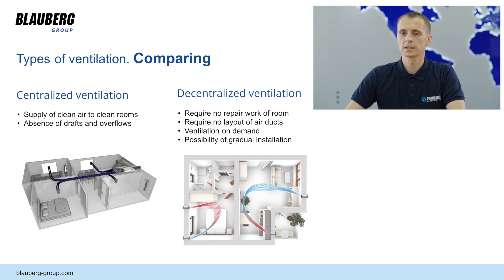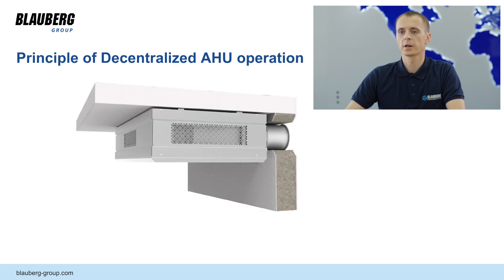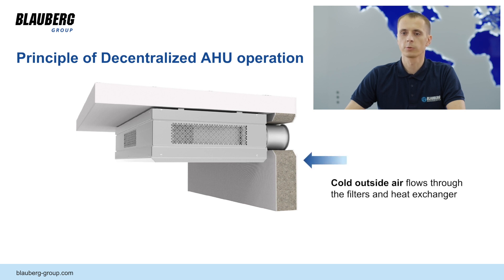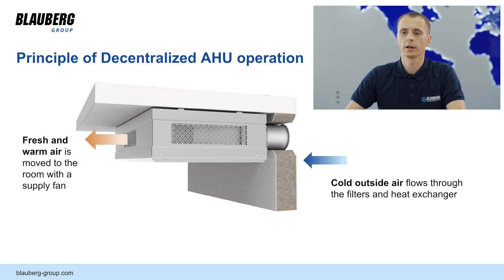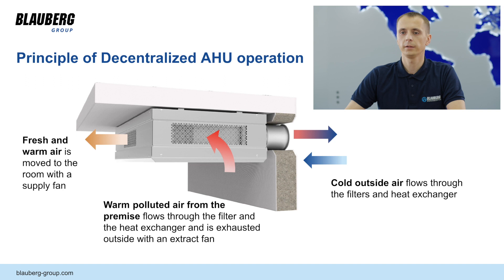The principle of operation of decentralized ventilation with recuperation: outside air passes through a heat exchanger where it is warmed up by the heat of the extracted air, and already warm air enters the room. Dirty and warm extracted air is removed from the room using a centrifugal fan. When it passes through the heat exchanger it gives off its heat to the supply air. In cold season this helps to reduce heat loss. In summertime the supply air temperature is lowered, which reduces the load on the air conditioner.